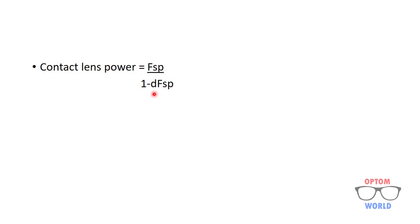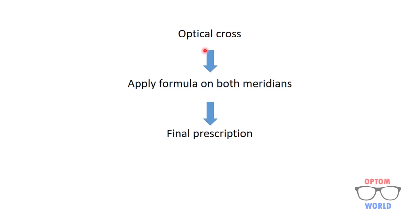Since in a toric prescription we have different power in different principal meridians, we will first draw the optical cross of the spectacle prescription, then apply the formula to both meridians separately, find their values, and finally draw the contact lens prescription from those calculated values.